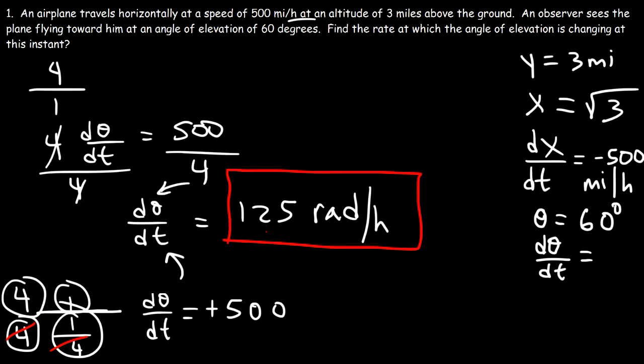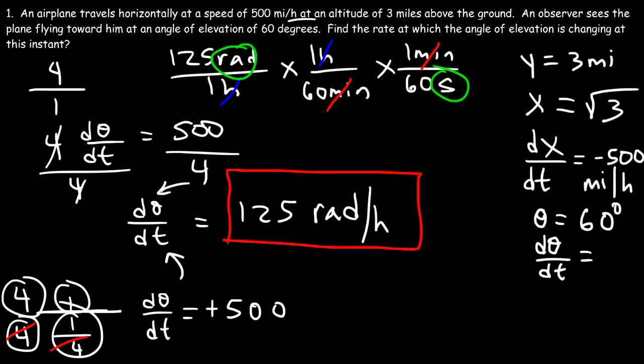Let's say if you want it in seconds, here's what you can do. So start with what you're given, 125 radians per hour. And convert to minutes first. 1 hour is equal to 60 minutes. And then convert to seconds. So 1 minute is equal to 60 seconds. Do it in such a way that the unit hours will cancel, and the unit minutes will cancel as well. So we're left with radians per second, if you ever need to change it. So it's going to be 125 divided by 60, divided by 60 again. So it's going to be a very small number, if you want it in radians per second. So it's 0.0347 radians per second.